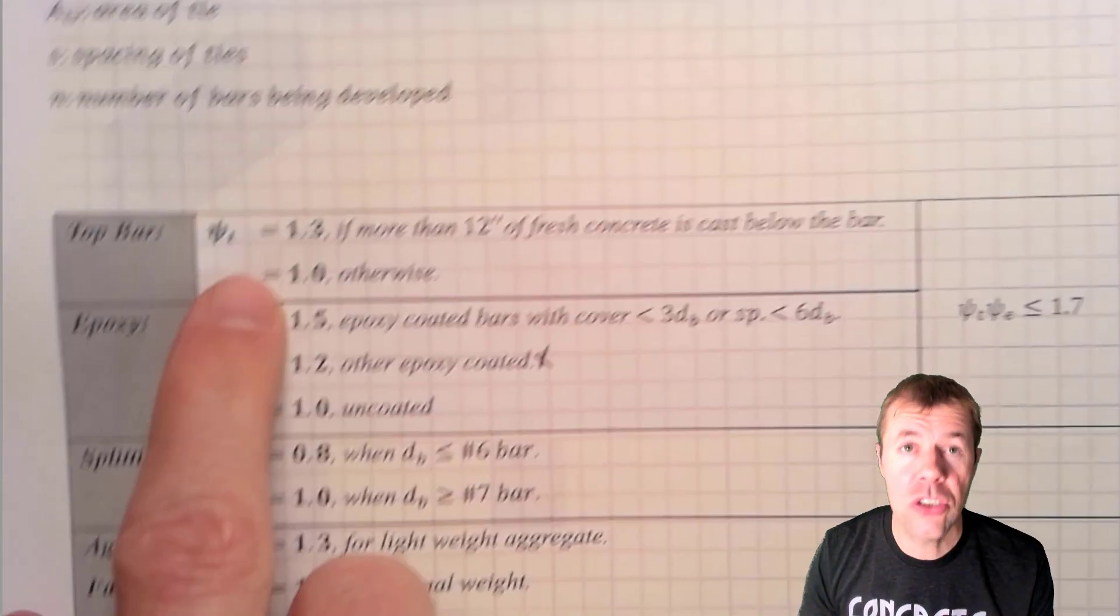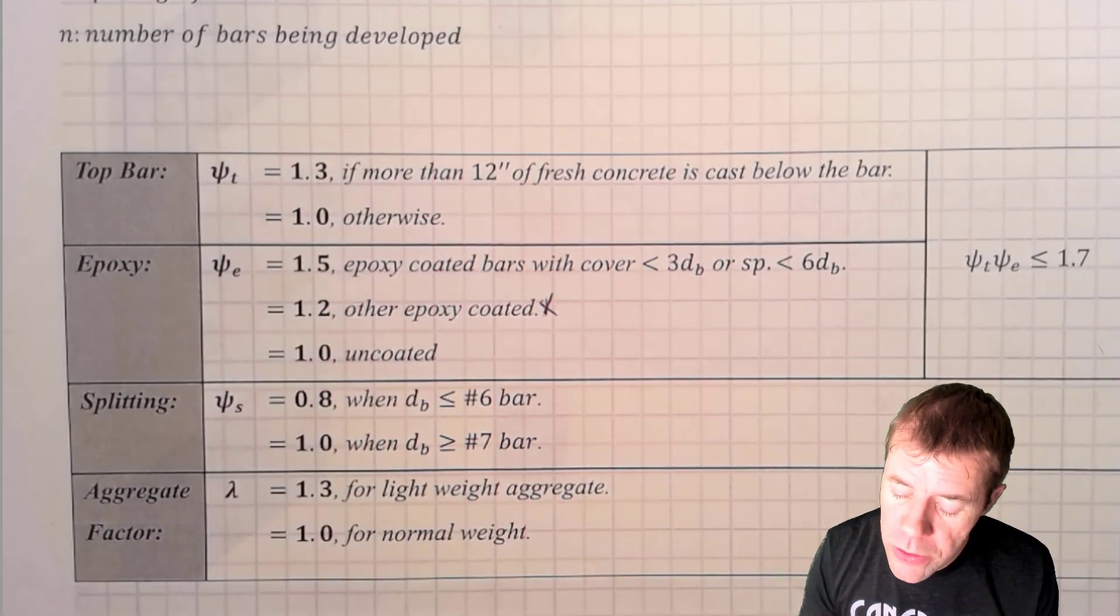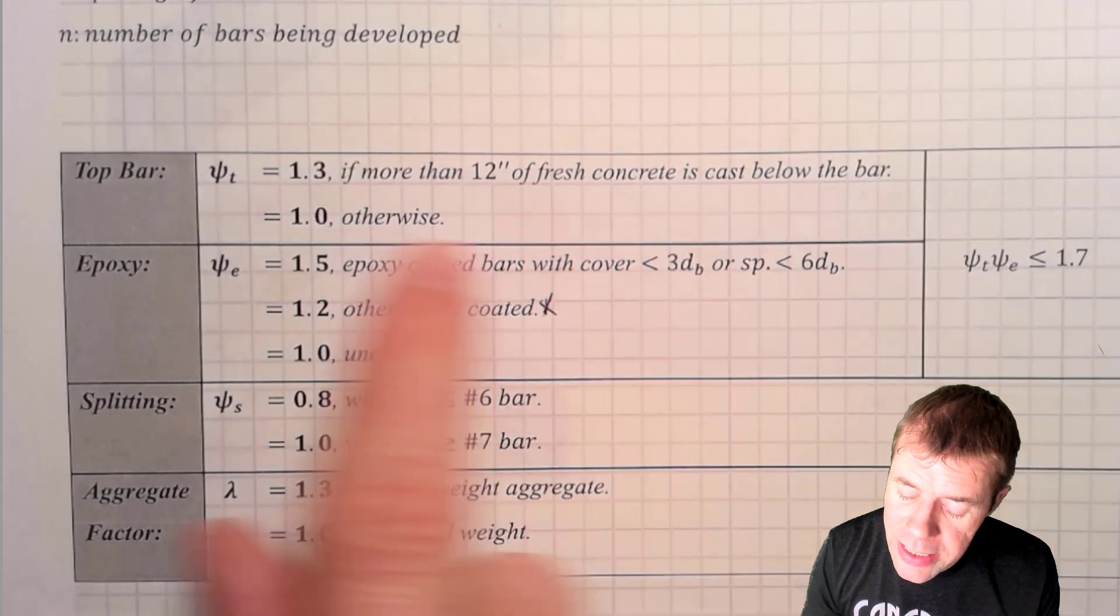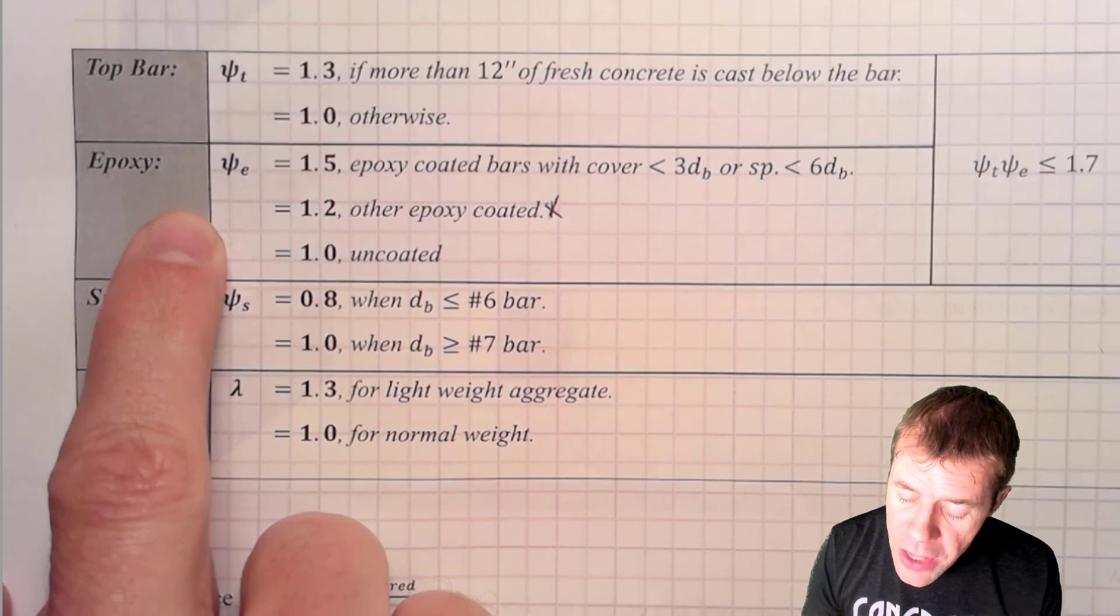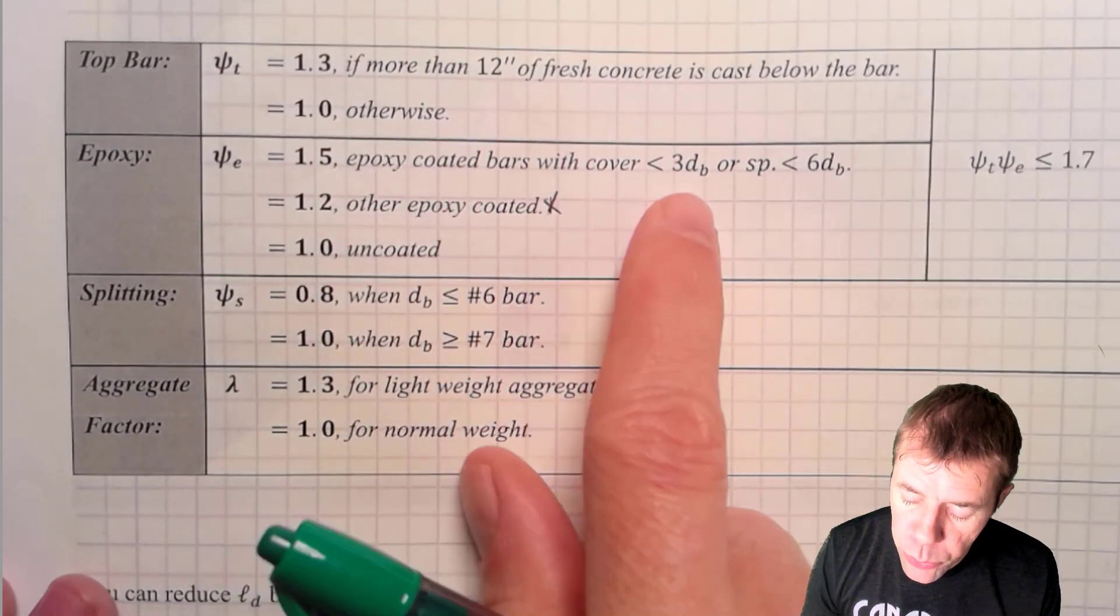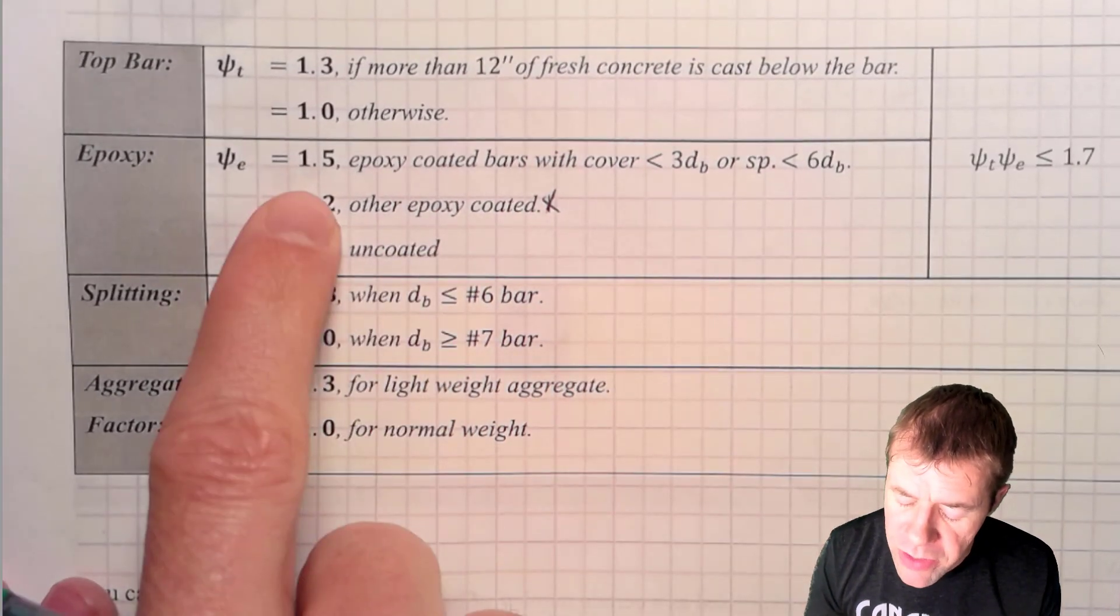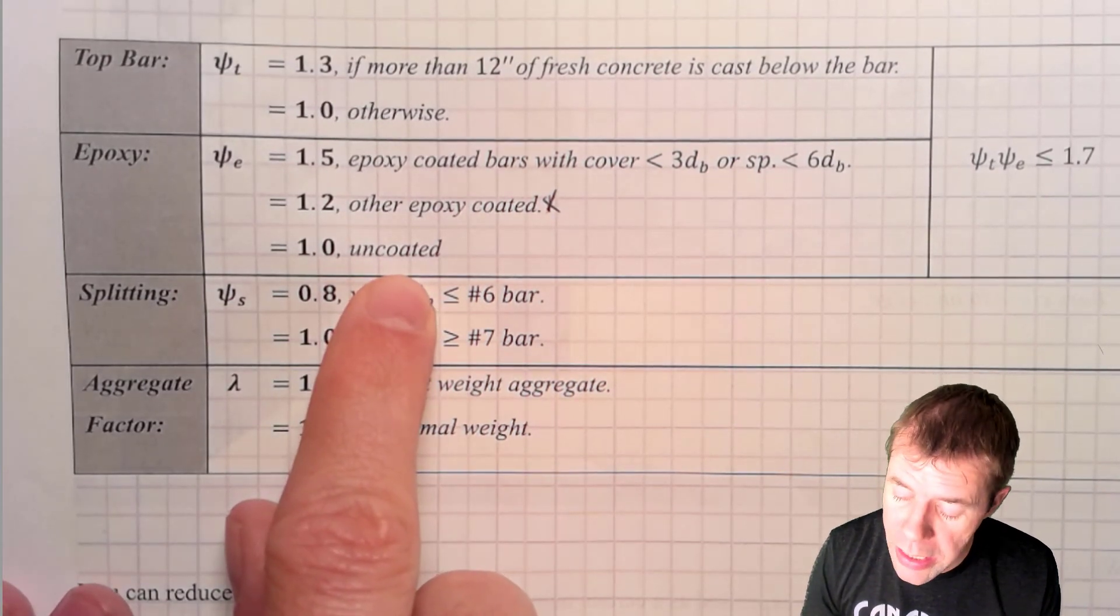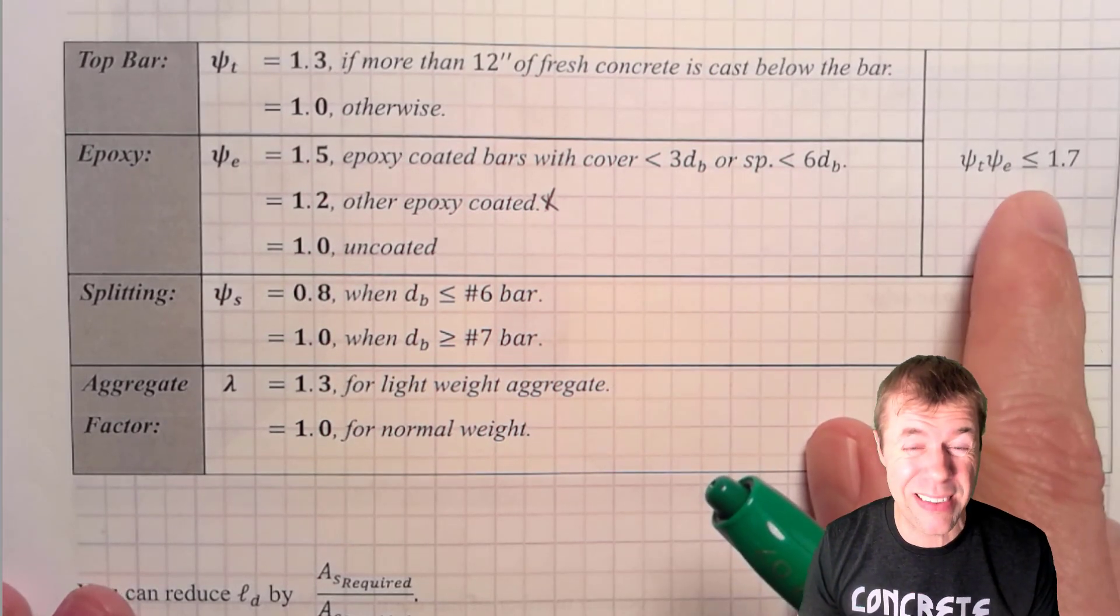Psi T is something we call the top bar effect. I showed you that before in images. If we have more than 12 inches of fresh concrete cast below the bar, then my psi T is 1.3, otherwise it's 1. If I have epoxy coated steel, then I need 1.2. Or, if the cover is less than 3 bar diameters or the spacing is less than 6 bar diameters, I need 1.5. If it is uncoated or black steel, then I use a 1. Now, this psi T and psi E is limited to be less than 1.7.